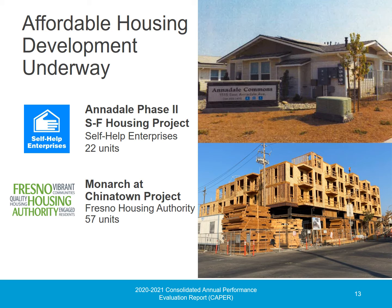Self-Help Enterprise's Annadale Phase II Single-Family Housing Project consists of new construction of 22 single-family housing units and on- and off-site improvements. The City provided $2,568,000 in HOME funding for construction, with an estimated project cost of $14,139,895. Fresno Housing Authority's Monarch at Chinatown project consists of new construction of 57 multi-family housing units, with a total estimated project cost of $32,239,714, of which $397,118 is to be provided for eligible construction costs.